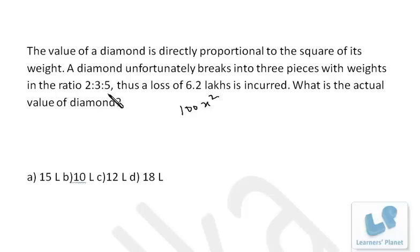So the total value will be 25 plus 9 plus 4, that is 38x². Initially the value was 100x², now the value is 38x² of the three pieces. So what is the loss? 62x². So 62x² is actually 6.2 lakh, that means 100x² must be 10 lakh. As simple as that. I hope you are clear now.